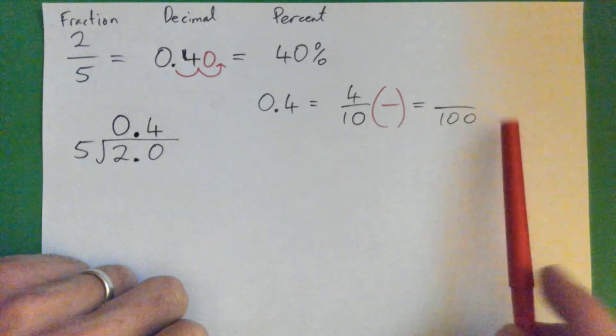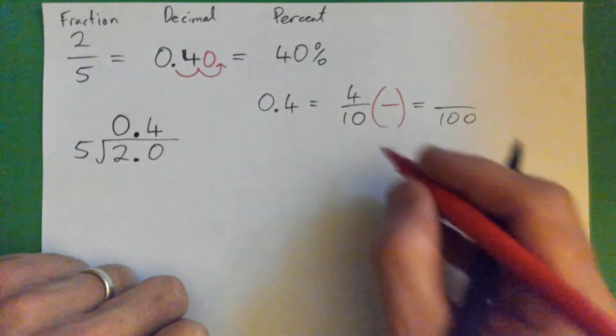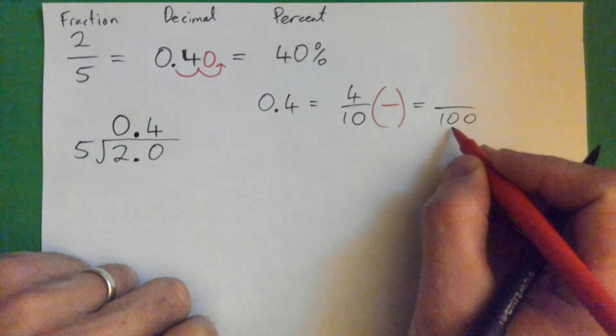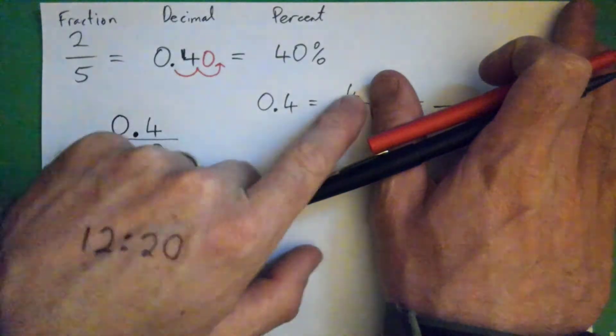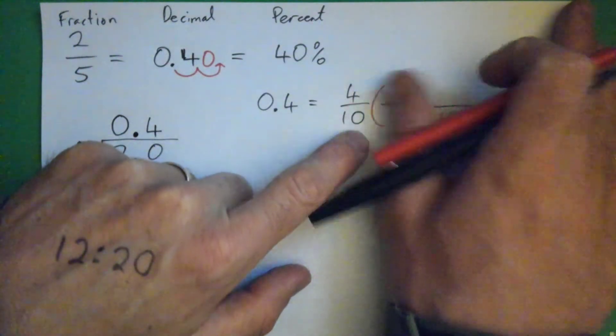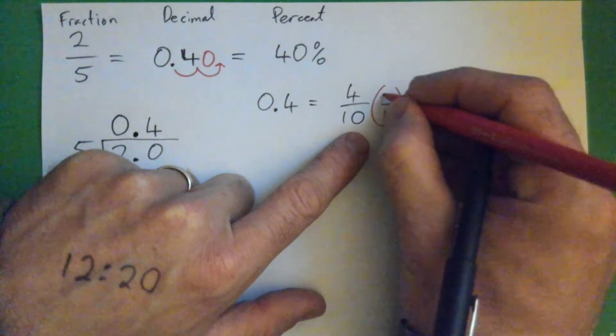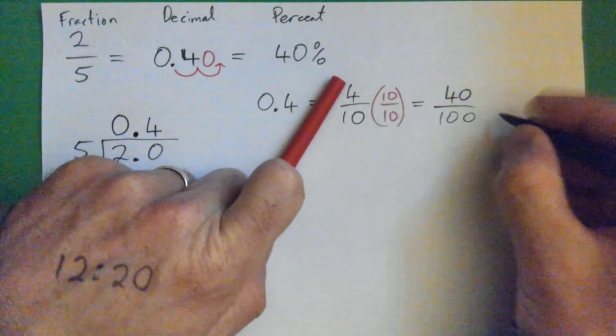Ten times what gives a hundred? It's four-tenths, or zero point four is four-tenths, right? And so, multiply this by ten over ten, and that's 40 over a hundred.